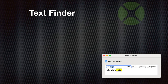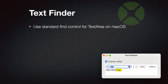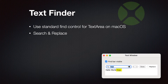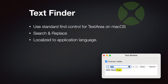Then we got TextFinder. You may have seen in TextEdit on macOS that you can search within your document. You can use the standard FindControl in a text area on macOS, doing search and replace. The user will like it because it's what they are used to, and it's localized automatically to your application language by Apple. It's just a little feature which our plugin can turn on, and then you can enjoy it.